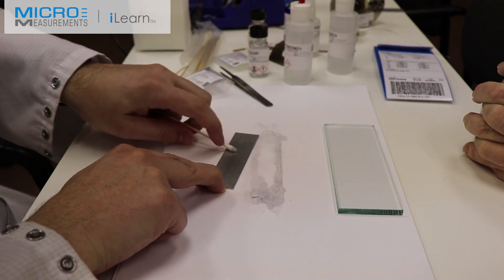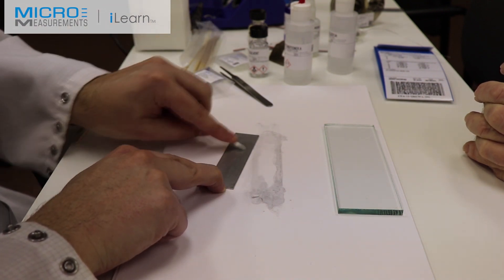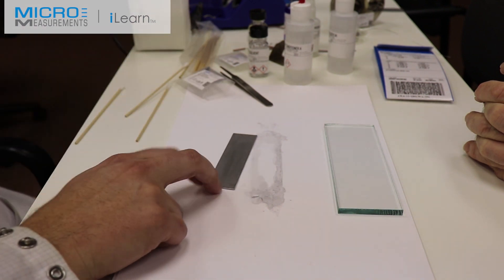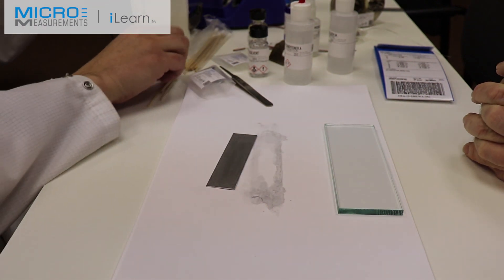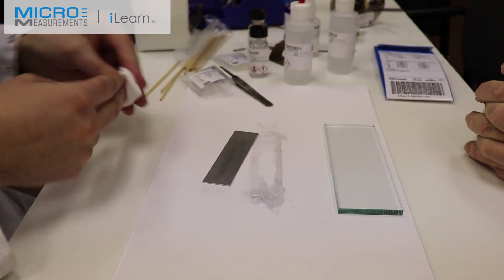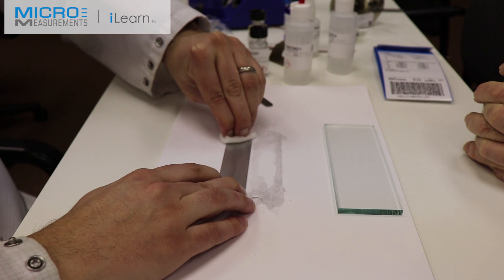Once he's finished the scrub, he doesn't want it to dry though. He wants to make sure this is nice and wet, so he's keeping plenty of conditioner there. Then he's going to take a clean dry gauze sponge, fold it into quarters, and with a single wiping motion, dry the surface of the beam.